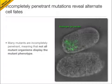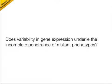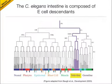This particular mutant results in an incompletely penetrant lack of gut cells in the developing embryo. Our question, then, was whether variability in gene expression underlies the incomplete penetrance of this phenotype. First, a quick introduction to C. elegans intestinal development.